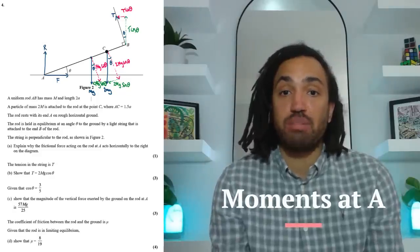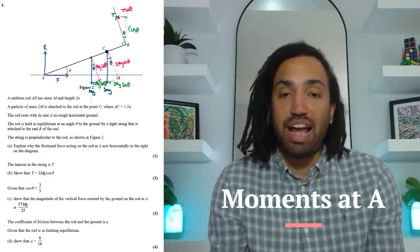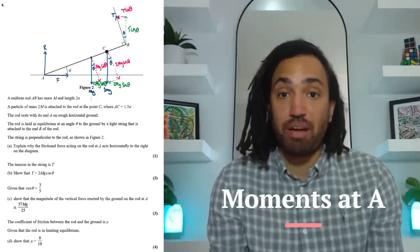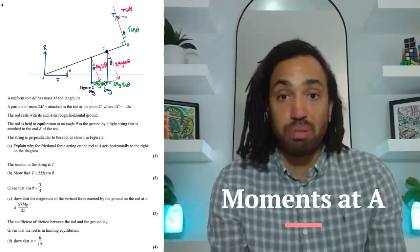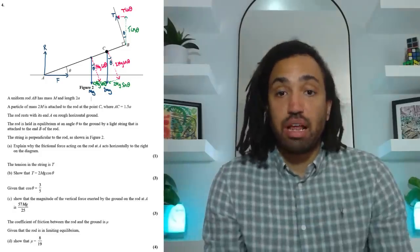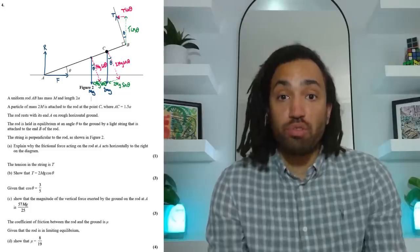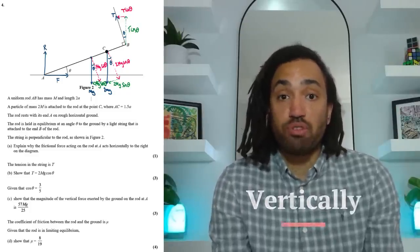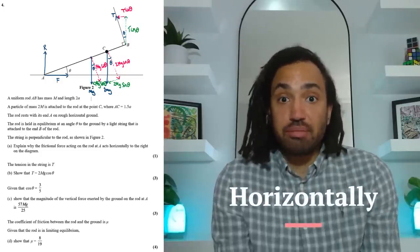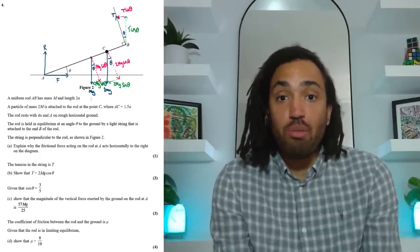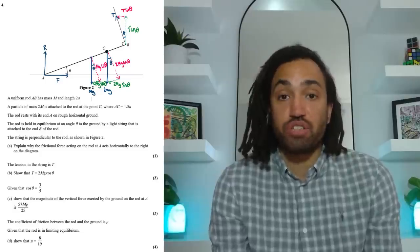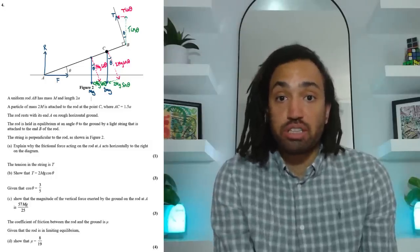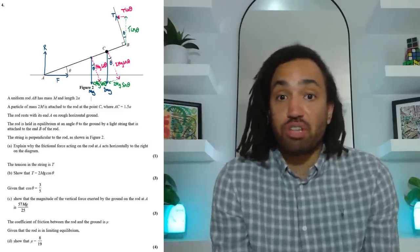So point A has two unknown forces so if we take moments about that point it will cancel them out completely allowing us to work out what T is. And then part C we resolve the forces going vertically and part D we resolve the forces going horizontally and that's it. And you'll be so surprised how many of the moments questions just follow that pattern of taking moments and then resolving either horizontally or vertically and then resolving in the other direction.